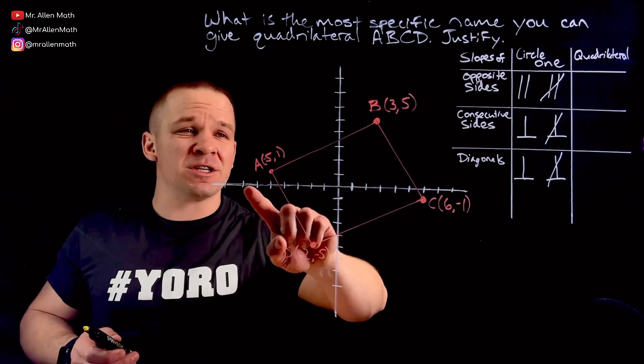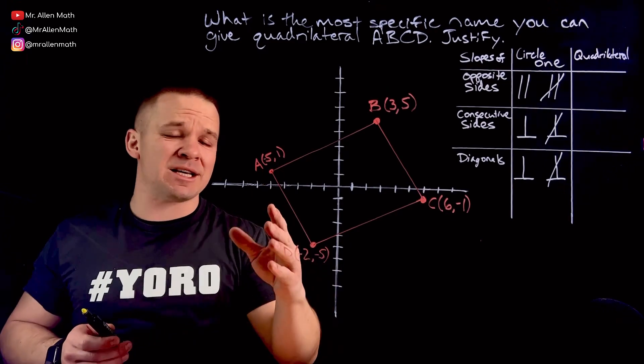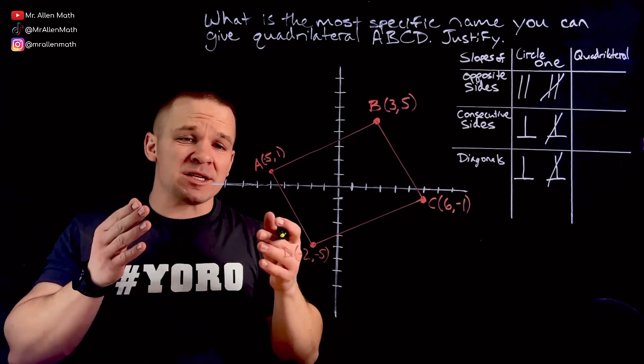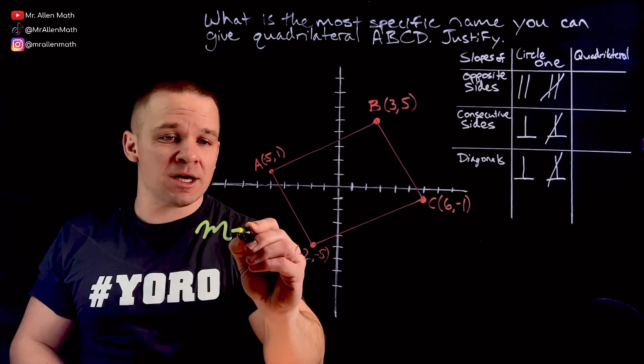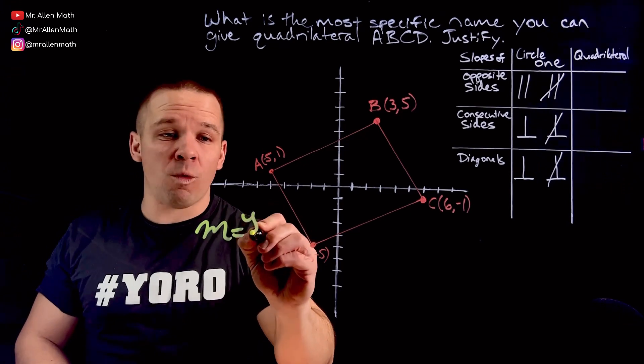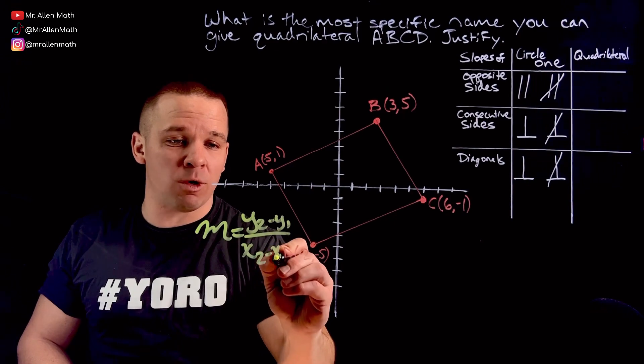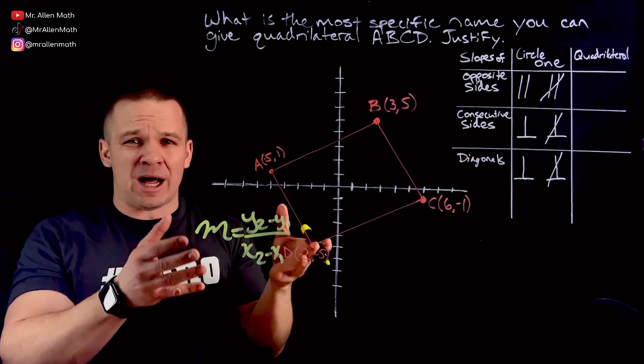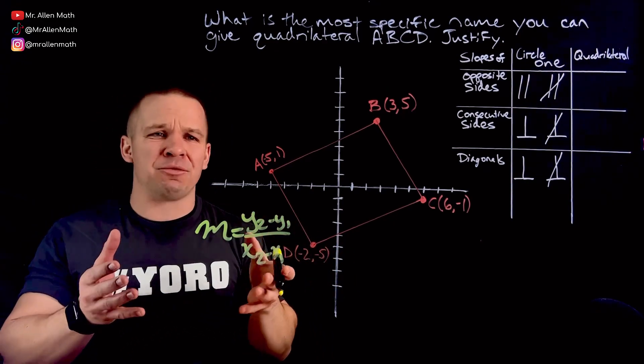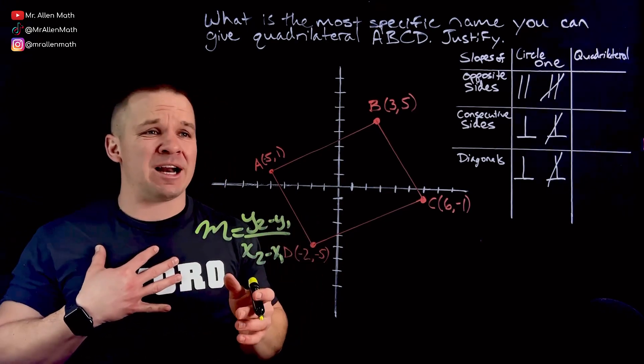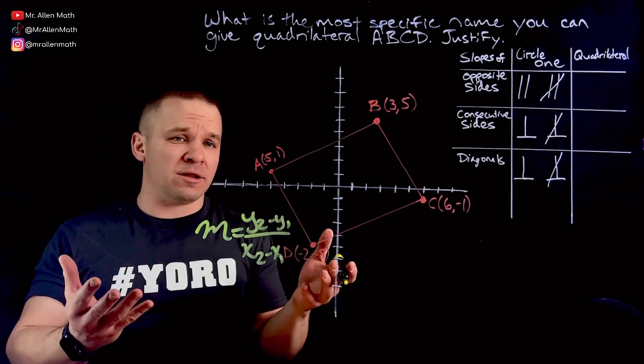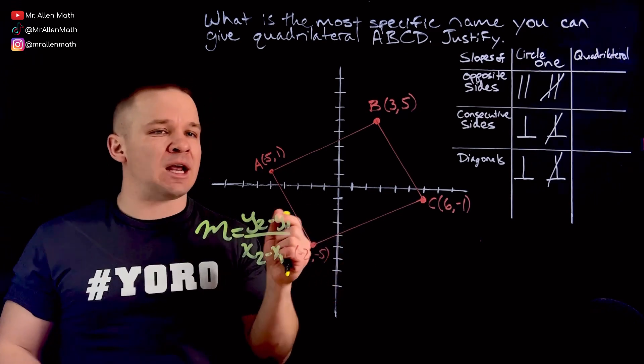First thing I want to do here is figure out the slopes of each one of these sides. I can do so using my slope formula, which is the change in Y, Y2 minus Y1, over my change in X, which is X2 minus X1. Or, since it's already plotted on here, I can just go ahead and count this thing out. I personally like counting it out because I'm going to have it on graph paper regardless. So rise over run is the name of the game.